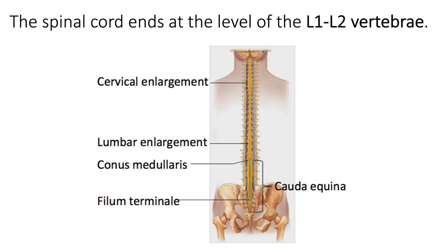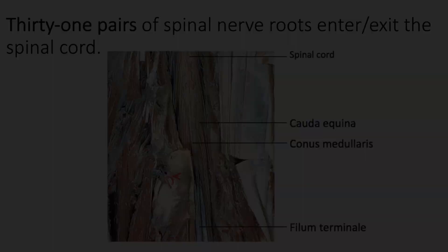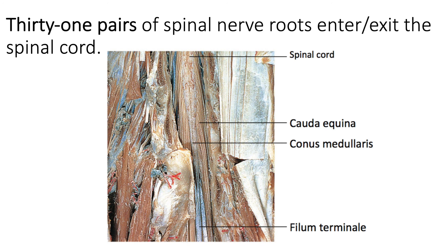Inferior to the conus medullaris is something called the cauda equina, meaning "horsetail" in Latin. From the conus medullaris, individual spinal nerves exit the spinal cord from about L2 down to the coccygeal nerves. Collectively, we refer to all of those nerves as the cauda equina because it resembles a horsetail. The last important structure to note is the filum terminale, shown here as the green line extending from the conus medullaris to the coccyx.